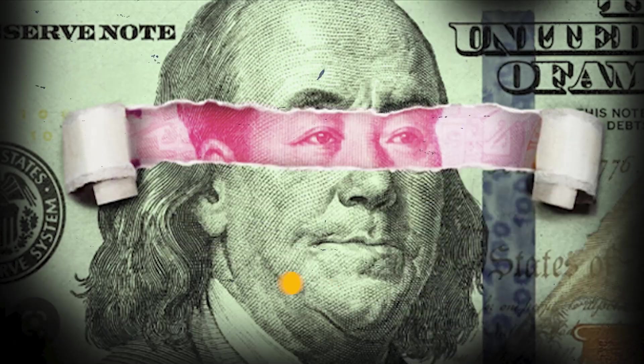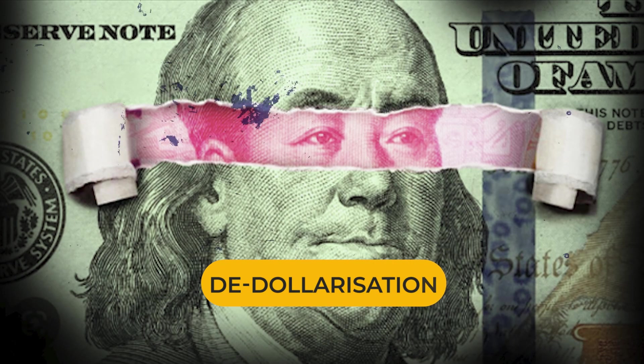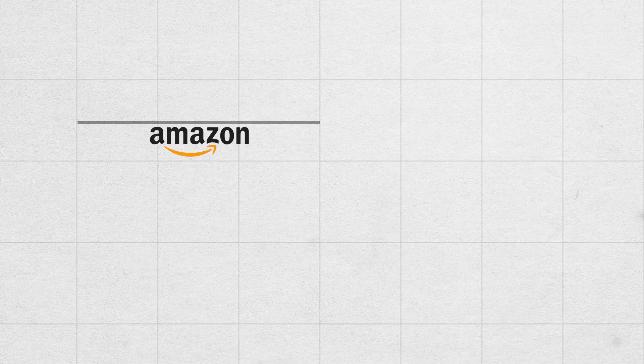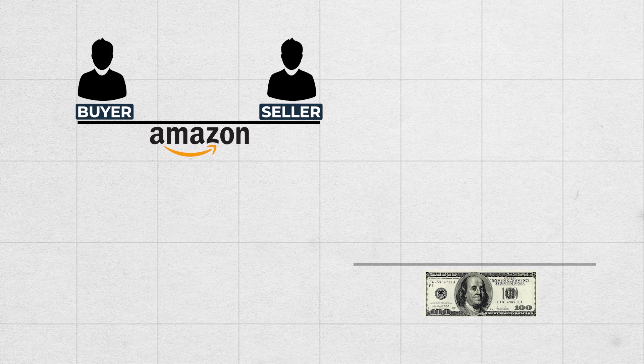So when everything was going well, why are we suddenly talking about de-dollarization? Why does the world want to move away from the US dollar? To understand this, let's compare the US dollar with Amazon. It might sound like a weird comparison, but Amazon is a marketplace connecting buyers and sellers — a platform. Similarly, the US dollar is also a platform enabling different parties to come together and conduct global trade.